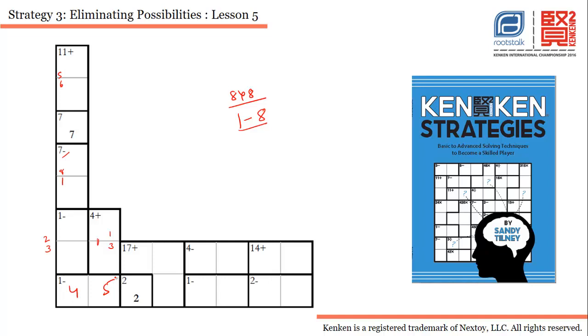Now let's try to solve other cages. We have 14 plus. The only possible combination is 8 and 6—you can't use 7 plus 7—so 8 and 6 is the only combination. I don't know about the order.